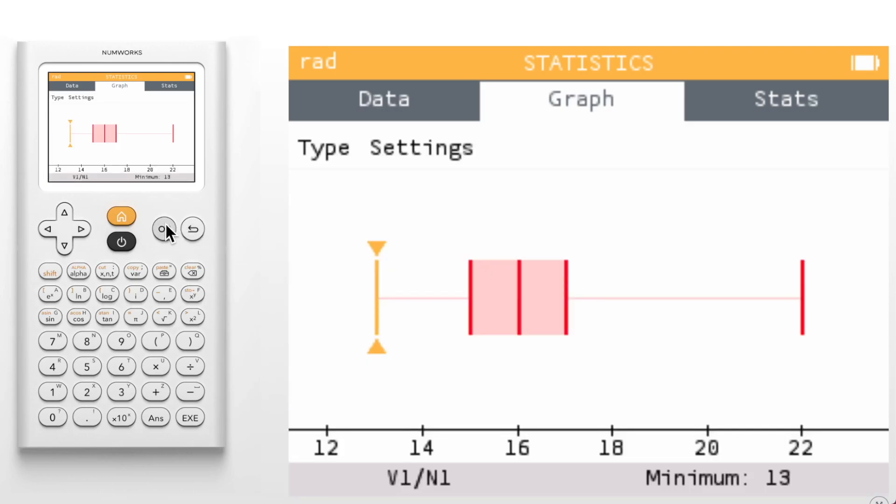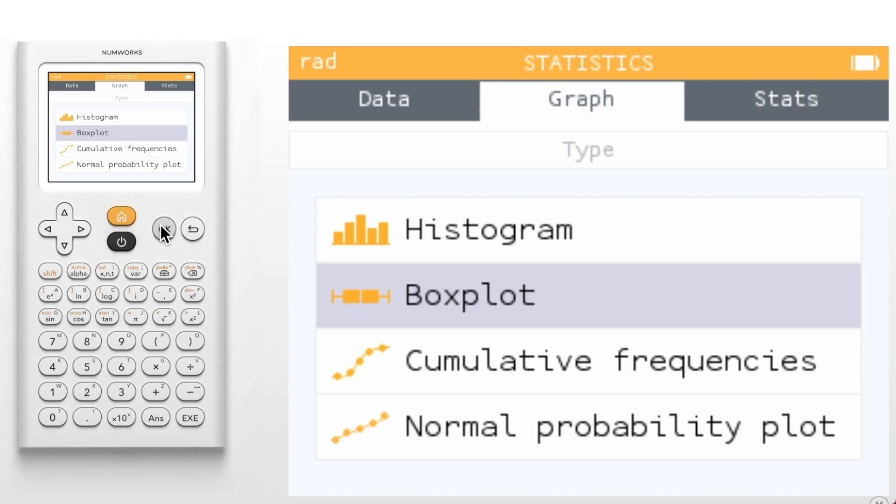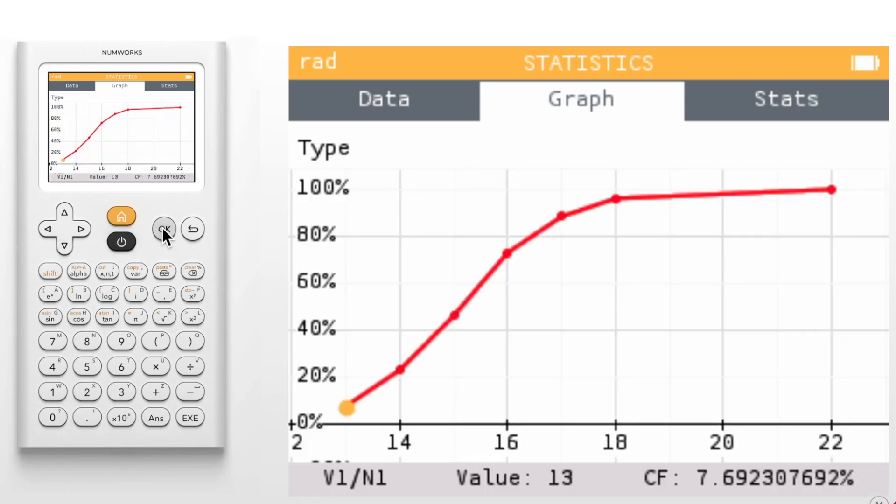Going back to our list of graphs you'll notice we have two new graphs. The first is the cumulative relative frequency graph. Notice that we can navigate through each data point and determine the percent of values less than or equal to a given value.